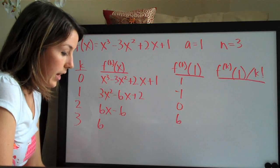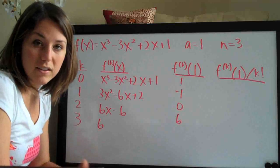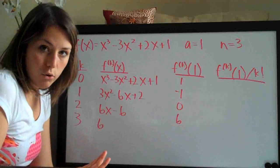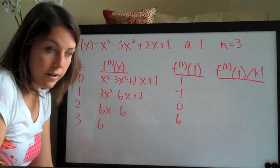And factorial is just an algebraic notation. So for example, 6 factorial would be 6 times 5 times 4 times 3 times 2 times 1. You always stop at 1. 4 factorial would be 4 times 3 times 2 times 1. You get the idea.